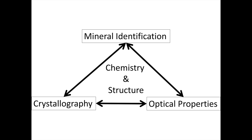By combining our optical properties and our crystallography, we can often identify materials. Or if we know the identity of a material and combine that with our optical properties, we can determine how that material is oriented in space. Or if we know the identity of a material and can combine that with observable crystallographic forms, we can predict how the optical properties will behave in a particular direction through our crystal, or any other physical property.